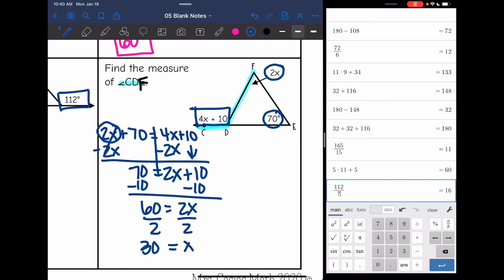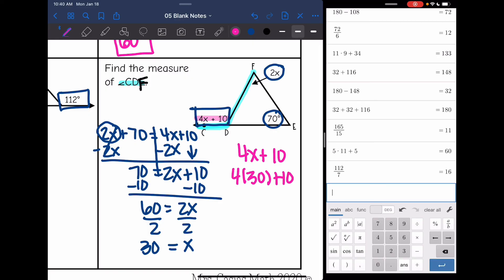We are not done yet. Remember, I have to find the angle CDF. So I'm plugging in to 4x plus 10. And I'm going to replace x with 30. And 4 times 30 plus 10 will tell me the measure of angle CDF. 4 times 30 plus 10 is 130.